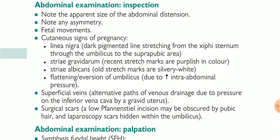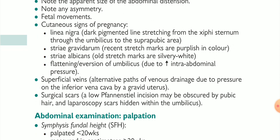Regarding the umbilicus: there is flattening and eversion of the umbilicus due to increased intra-abdominal pressure. Whenever intra-abdominal pressure increases, it pushes from inside to outside, so the umbilicus becomes flattened and everted. Regarding superficial veins: the superficial veins are an alternative part of the venous drainage due to the pressure on the inferior vena cava by the gravid uterus. The pressure on the inferior vena cava causes venous congestion, making superficial veins visible. Sometimes this leads to hypertension in the pregnant lady.